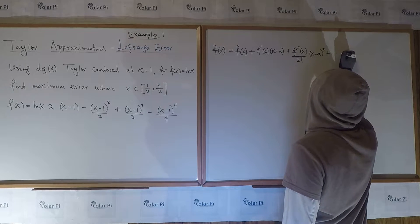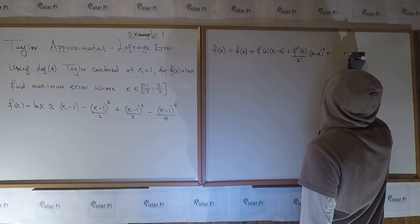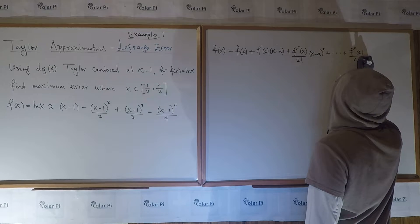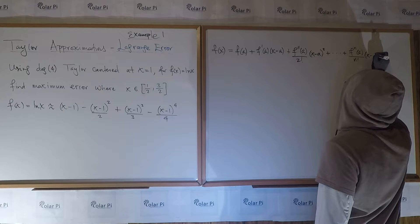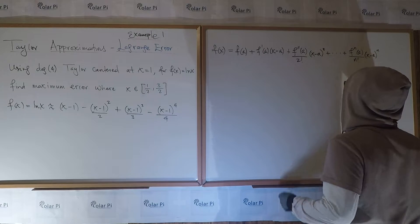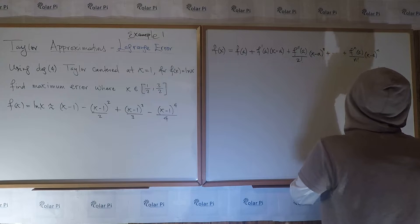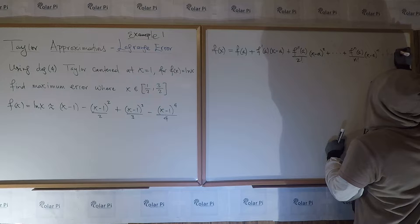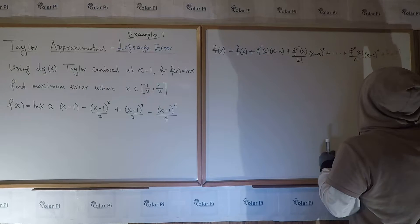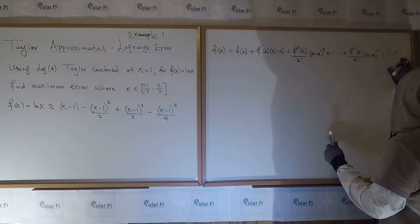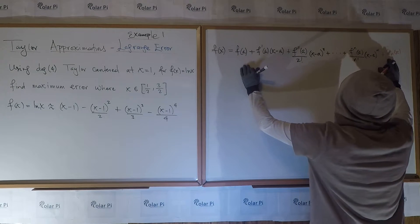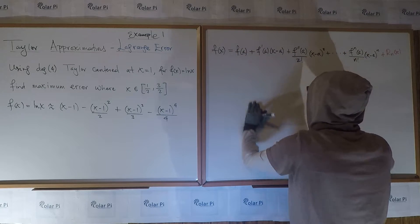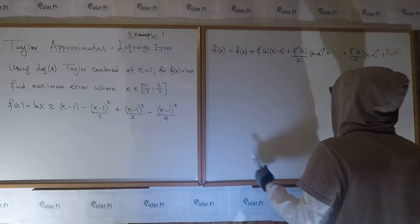And if we skip on to the nth term, it will be plus dot dot dot plus fn of a over n factorial times x minus a to the n. And then plus the Lagrange error term, which is plus rn of x.